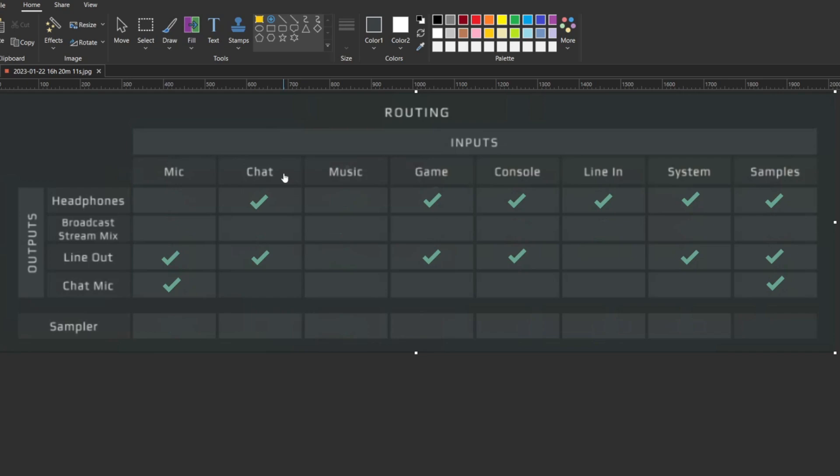Next, if you're playing with a group of people and you're using something like Discord, make sure Discord outputs to your chat and then make sure chat is routed to your headphones and your line-out. Do the same if you have any music applications running.